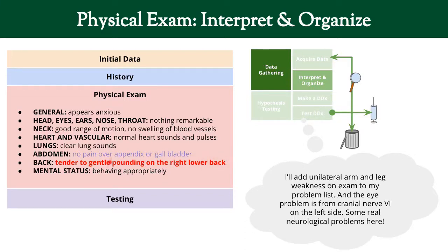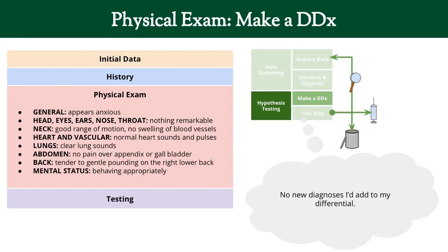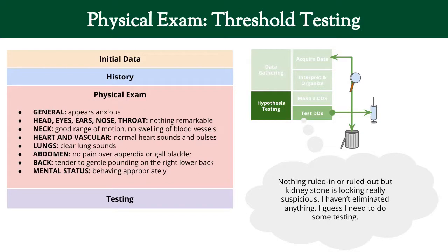Now let's interpret and organize the physical exam. We have tenderness to gentle pounding on the right back — that's another problem to add to our problem list. Also importantly, there's no pain over the appendix and gallbladder, which makes those two diagnoses less likely. There's nothing new to add to our differential, and the kidney stuff is looking more likely, especially the kidney stone. We haven't eliminated anything yet, so let's move on to testing.